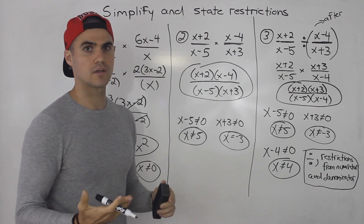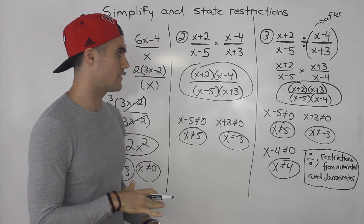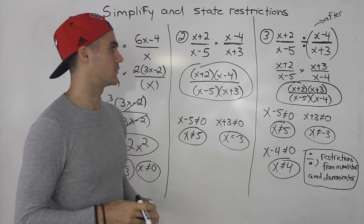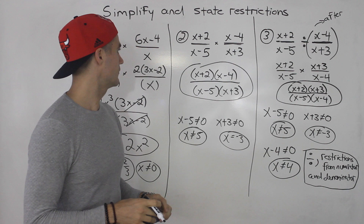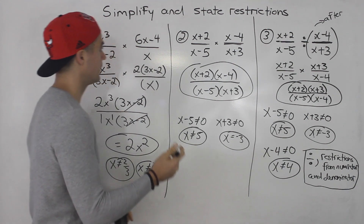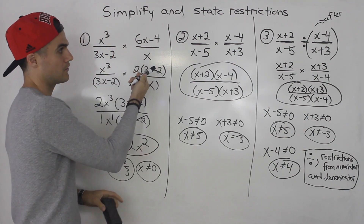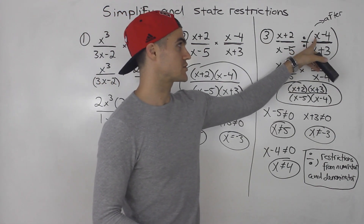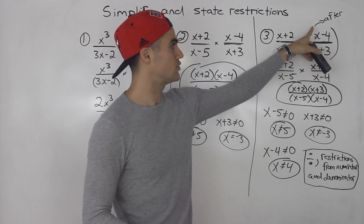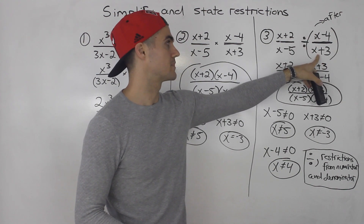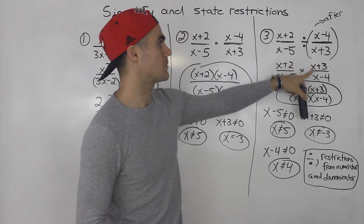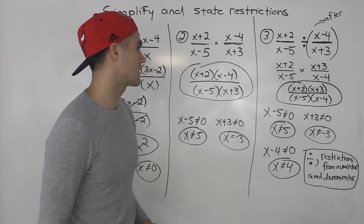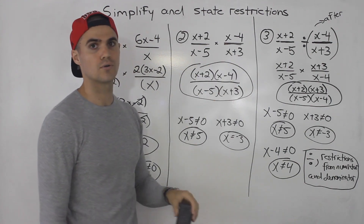So a couple of new things to take into account when getting restrictions for multiplying and dividing rational expressions. When multiplying, the denominator can't be zero. When dividing, the rational expression that comes after the division symbol — both its numerator and denominator can't equal zero. And when dividing, after you get the restrictions, flip that second fraction, and then everything proceeds the same as multiplication.